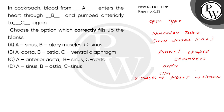So in cockroach, blood from sinuses enters the heart through ostia and is pumped anteriorly to the sinuses again via the aorta. The other options — anterior aorta alone, or muscles — will be incorrect. So the correct option is D. This is from NCERT Class 11, page number 113. Thank you.